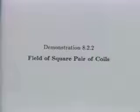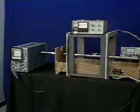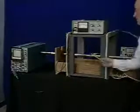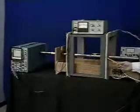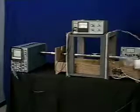The field of a square pair of coils can be found by using the Biot-Savart law. Here are our square coils, each with 50 turns and sides of length 45 centimeters.